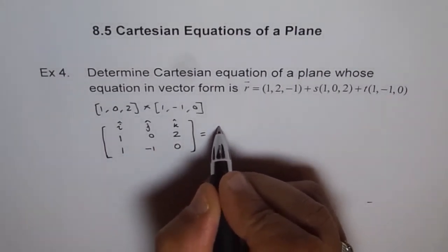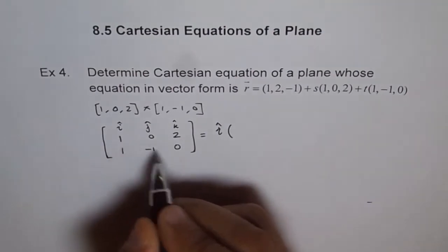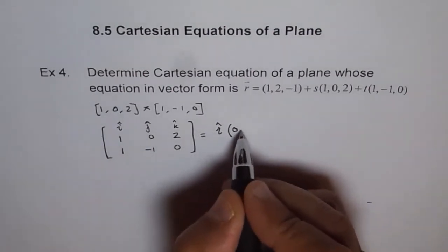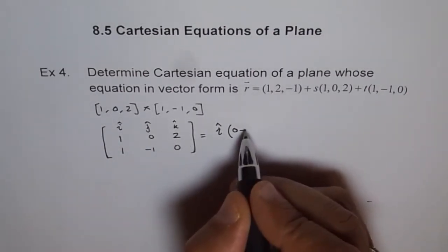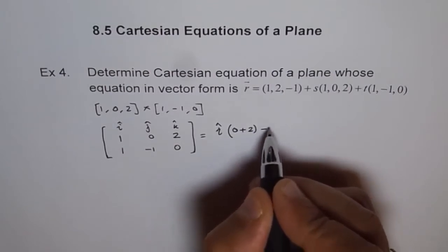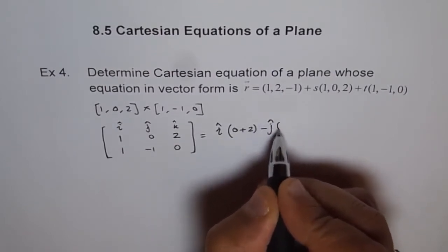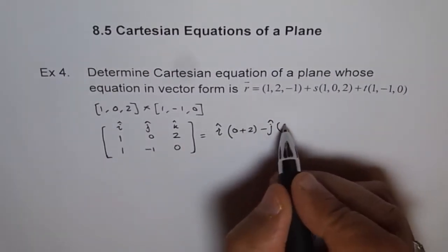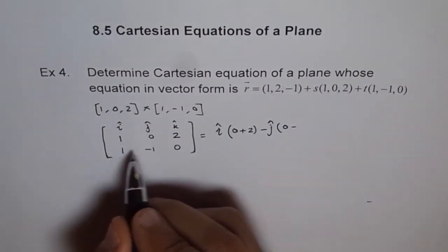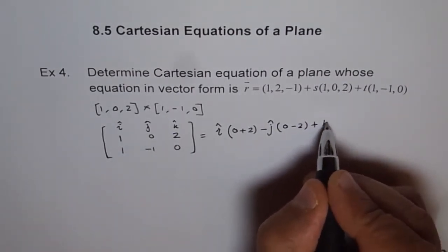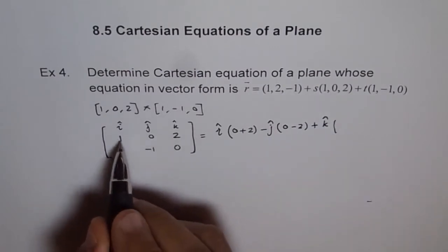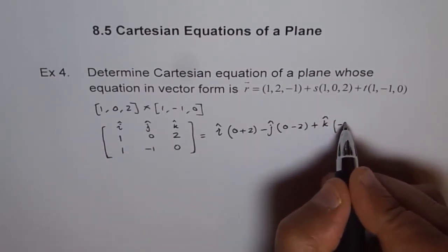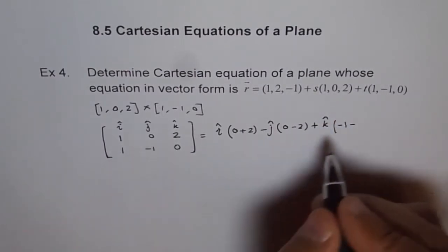We can write this as I times 0 minus 2 times minus 1 is minus 2, it becomes plus 0, minus J times 1 times 0, 0, minus 1 times 2 is 2, plus K times 1 times 1 minus 1 is minus 1, minus 0.